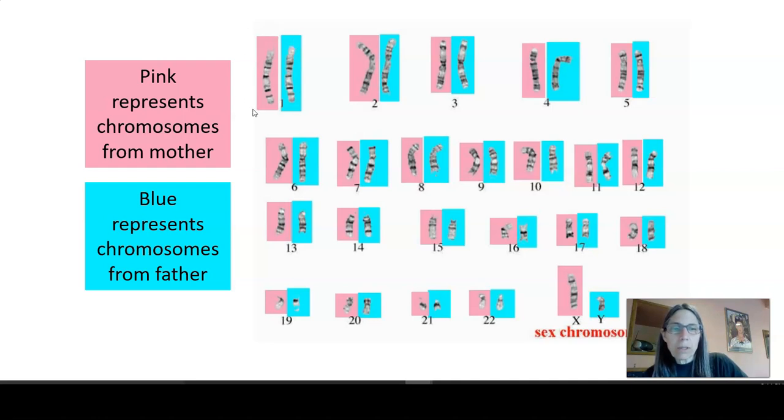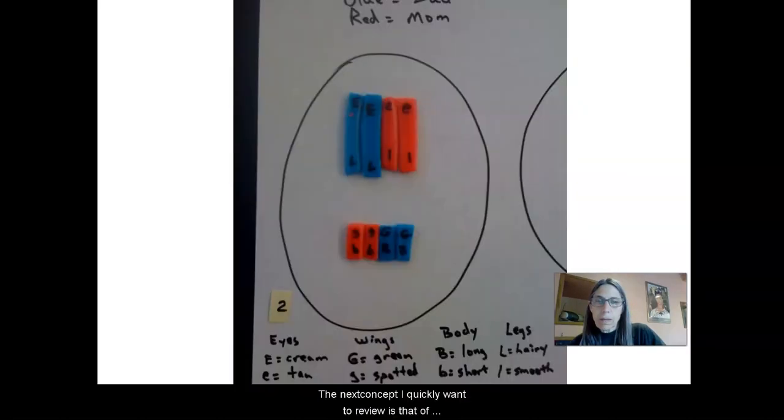During meiosis, homologous chromosomes pair up, and that's a really important function of meiosis. The next concept I quickly want to review is that of crossing over. So here we have an example of some homologous chromosomes that have lined up in the middle during meiosis. That is what we call crossing over.